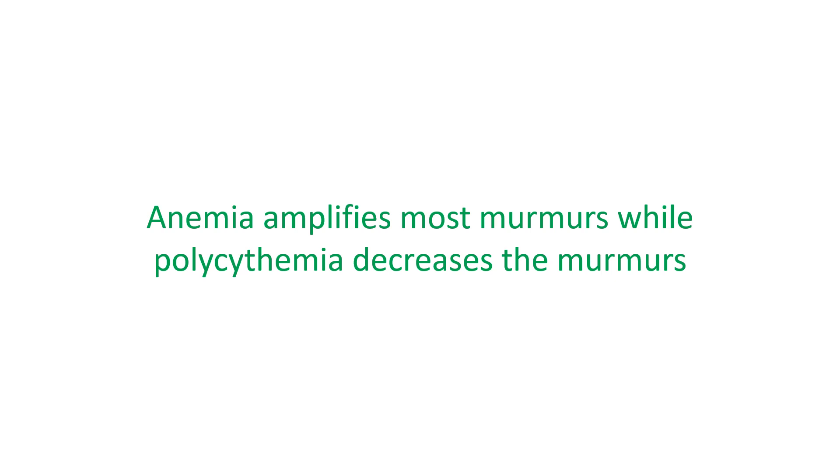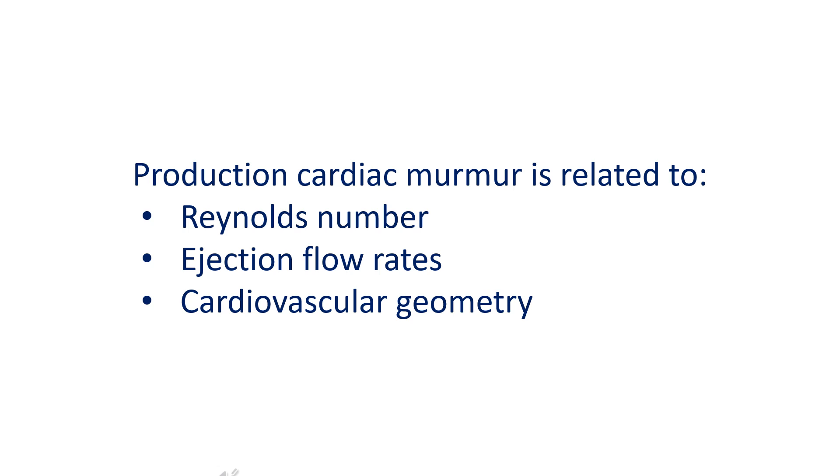That is why anemia amplifies most murmurs, while polycythemia decreases the murmurs. It has been shown that production of turbulent flow necessary for the production of cardiac murmur is related to the Reynolds number, ejection flow rates, and cardiovascular geometry.